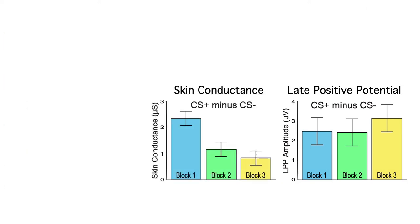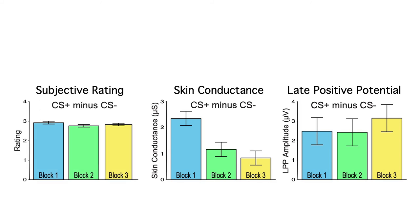You can see these effects in the CS plus minus CS minus difference scores — the CS plus elicited a larger LPP than the CS minus in all three blocks. By contrast, the skin conductance response habituated over time. Subjects also reported their subjective probability of the likelihood that the CS plus would be followed by a noise burst at the end of each block, and these subjective reports didn't habituate.